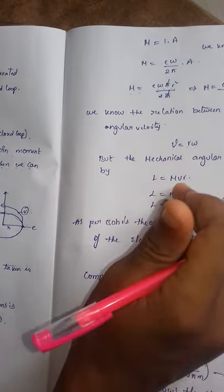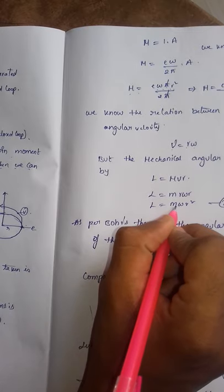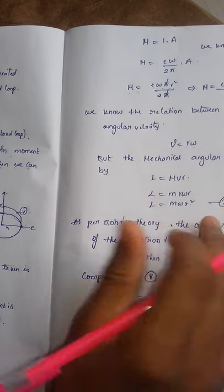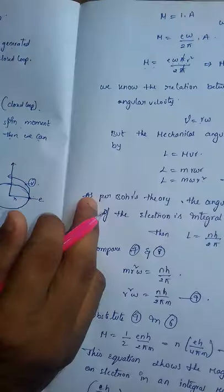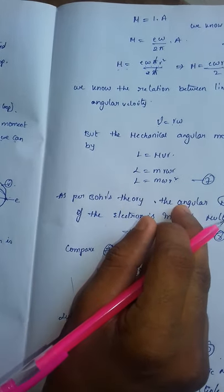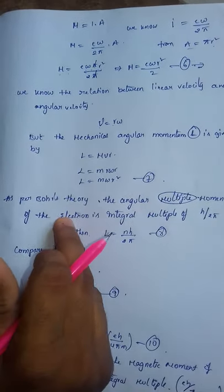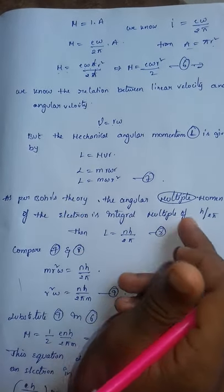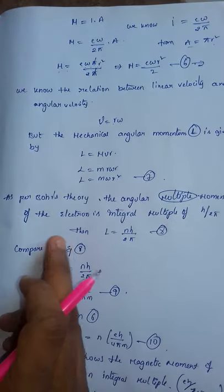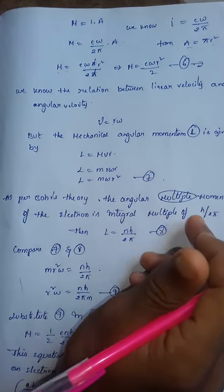We have to substitute these values in this equation. We get L equals to M omega r squared. This is the seventh equation. As per Bohr's theory, the angular momentum of the electron is an integral multiple of h by 2π. Then L equals to n h by 2π, where n is an integer.